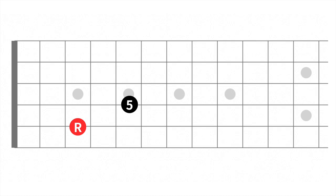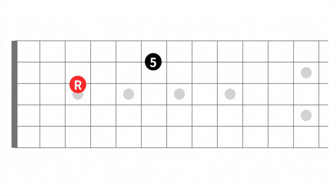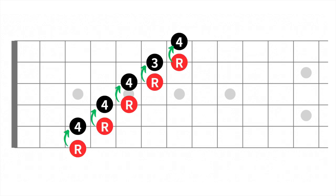By understanding this power chord shape, you can determine that the interval between the sixth and fifth strings is the perfect fourth. This pattern applies to all pairs of strings with the exception of the third and second strings. For that string pair, the power chord is formed with the ring finger three frets apart, and you can deduce that the interval between the third and second strings is the major third. In summary, the interval for each string pair is: 6-5 strings: perfect fourth; 5-4 strings: perfect fourth; 4-3 strings: perfect fourth; 3-2 strings: major third; 2-1 strings: perfect fourth. Understanding these intervals and power chord shapes is crucial because a vast majority of chords are built around the perfect fifth.